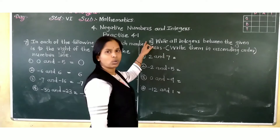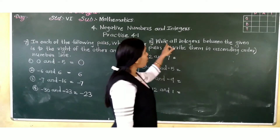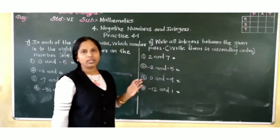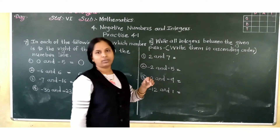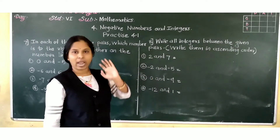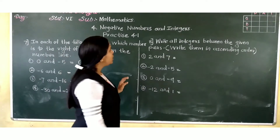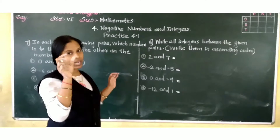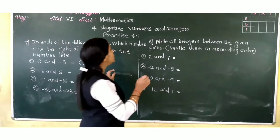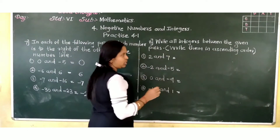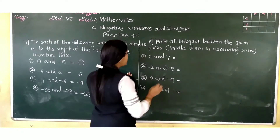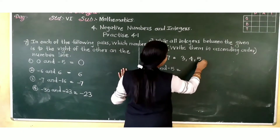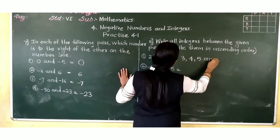Question number 8: write all integers between the given pairs. Between 2 and 7, which integers will be there? We have to write in ascending order, meaning smallest first. Between 2 and 7, the integers are: 3, 4, 5, and 6.